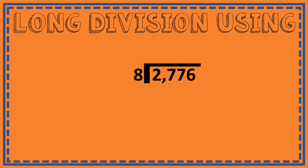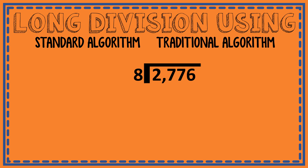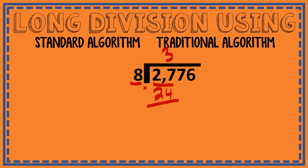The last way we're going to discuss dividing using long division is the standard algorithm, also called the traditional algorithm. This is the most common way people divide on a daily basis. I have 2776 divided by 8. This way can be the most challenging if you don't know your facts — that's why fluency with math facts is so important. Can 8 fit into 2? No. So I go to 27: 27 divided by 8 is 3, because 3 times 8 is 24, and 27 minus 24 is 3.